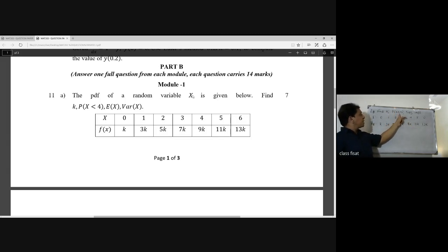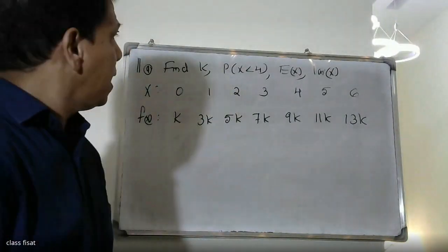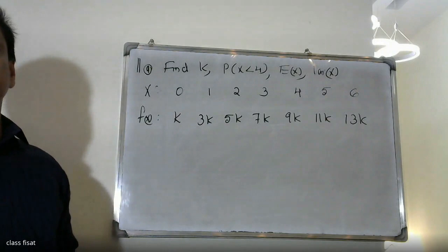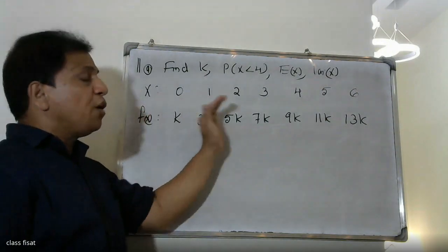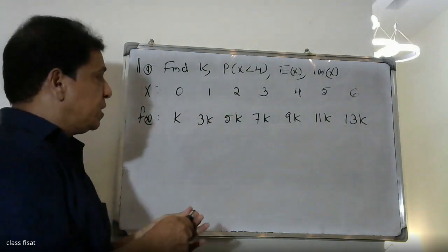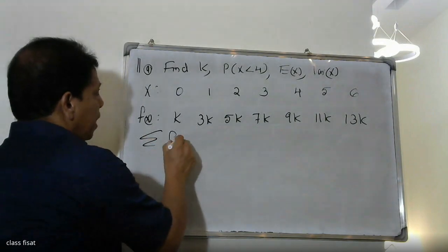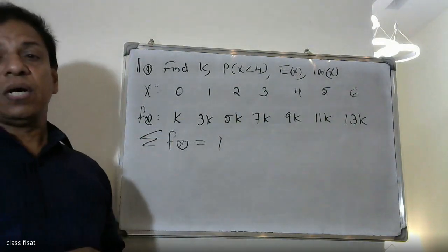We need to find: probability of X less than 4, expectation of X, and variance of X. Using the condition that the total probabilities must equal 1, we can find k.